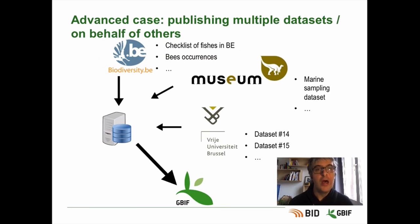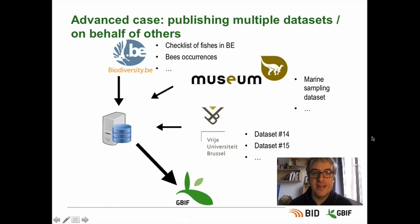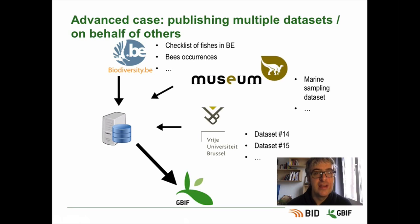It's not the only way. On this slide we can see a few more things. First, that there are several datasets published — you can see a checklist of fishes in Belgium, bees occurrences, marine sampling datasets, and others. So an IPT instance can publish several datasets. But it can also publish those datasets on behalf of several publishers or institutions. You can see that this IPT server on the left is publishing datasets for the Belgian Biodiversity Platform, but also for the Museum of Natural Science or the University of Brussels. So one IPT can publish several datasets and do it on behalf of several institutions.